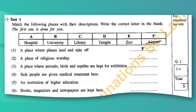Now let's look at another question from the 2018 past paper, Test 1. Match the following places with their descriptions and write the correct letter in the blank. The first one is done for you. In this question you have to look at the table given above the descriptions for your answers. 'A place where planes land and take off' — F, airport. 'A place of religious worship' — D, temple. 'A place where animals, birds and reptiles are kept for exhibition' — E, zoo. 'Sick people are given medical treatment here' — A, hospital. 'An institution of higher education' — B, university. 'Books, magazines and newspapers are kept here' — C, library.